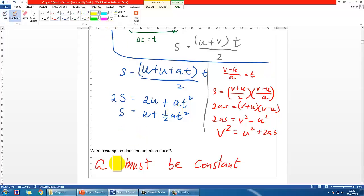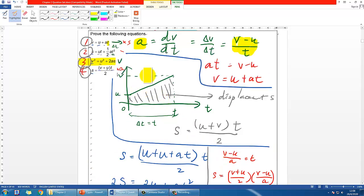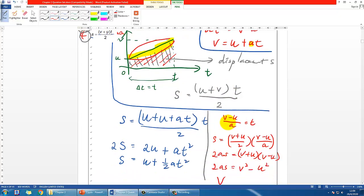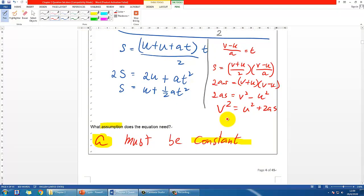Once again, the assumption is very important: acceleration must be constant. When you prove these equations, you realize we did this based on the fact that A is constant. This allows us to express acceleration as (V - U)/T and draw a straight line on the graph. If acceleration were changing, the line would be curved, and the area under the curve would be different. All these equations depend on the assumption that A must be constant.